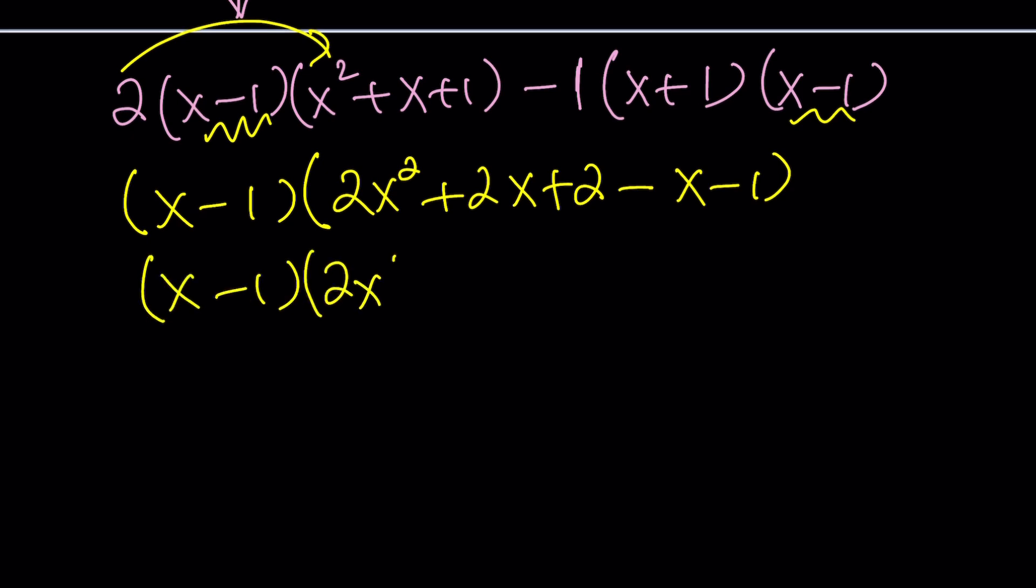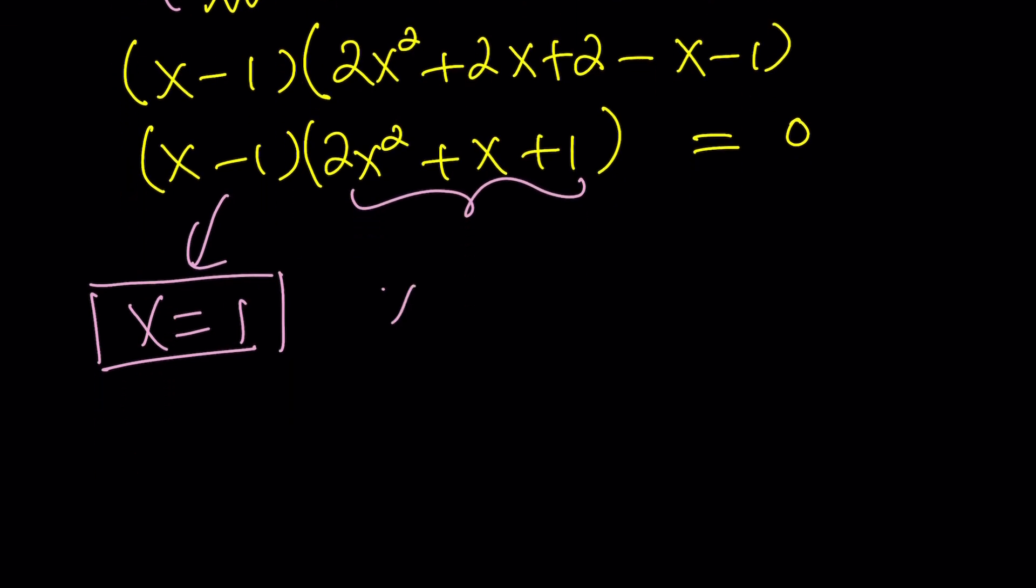And then if you simplify the quadratic, you get 2x squared plus x plus 1 equals 0. Now, we get a very simple solution from the first one, which is x equals 1. And we'll talk about that again later. The second one is a quadratic, so why not use the quadratic formula, right? So, let's see how we can apply it.